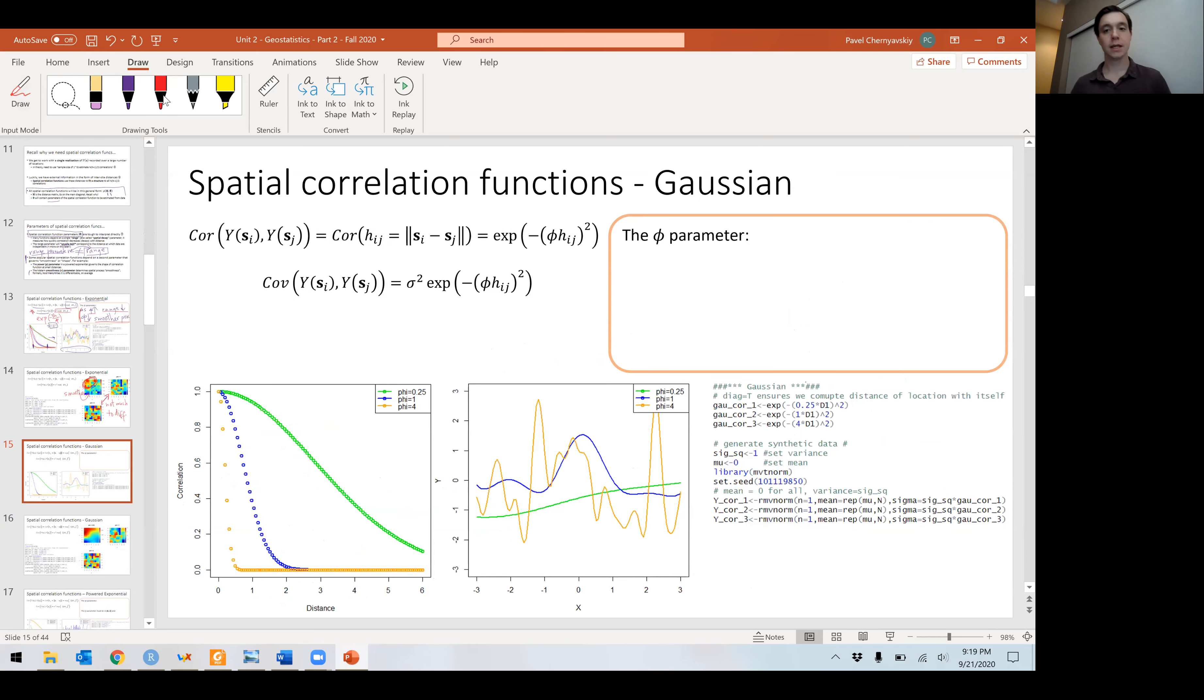Take a look at another one. Gaussian spatial correlation function. Looks very similar to the exponential, but now we have this squared term here. The phi parameter, smaller phi, larger range. But again, phi is not the range. Phi is not the range. The range for the green line is bigger than the range for the orange line. As far as smoothness, you can see this is much smoother than the exponential.